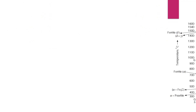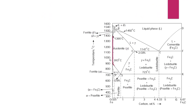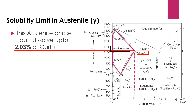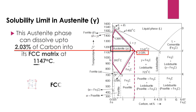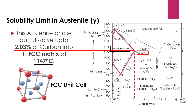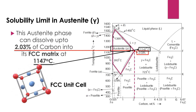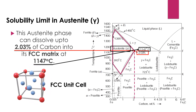This region belongs to the 100 percent austenite phase, where it is thermodynamically stable. This austenite phase can dissolve up to 2.03 percent of carbon into its FCC matrix at 1147 degrees centigrade.